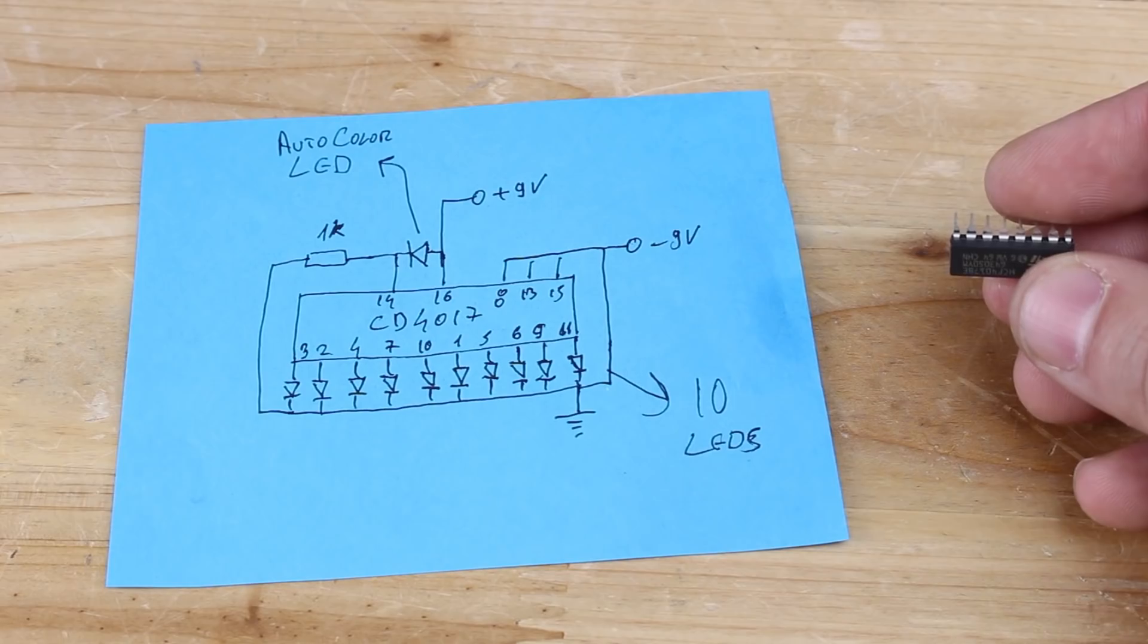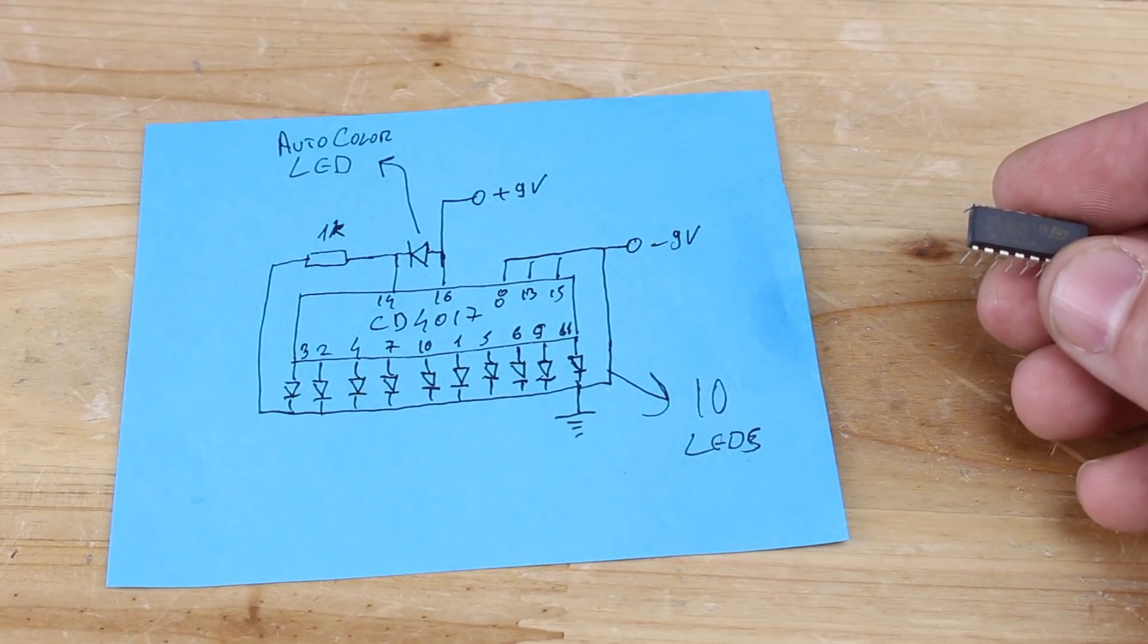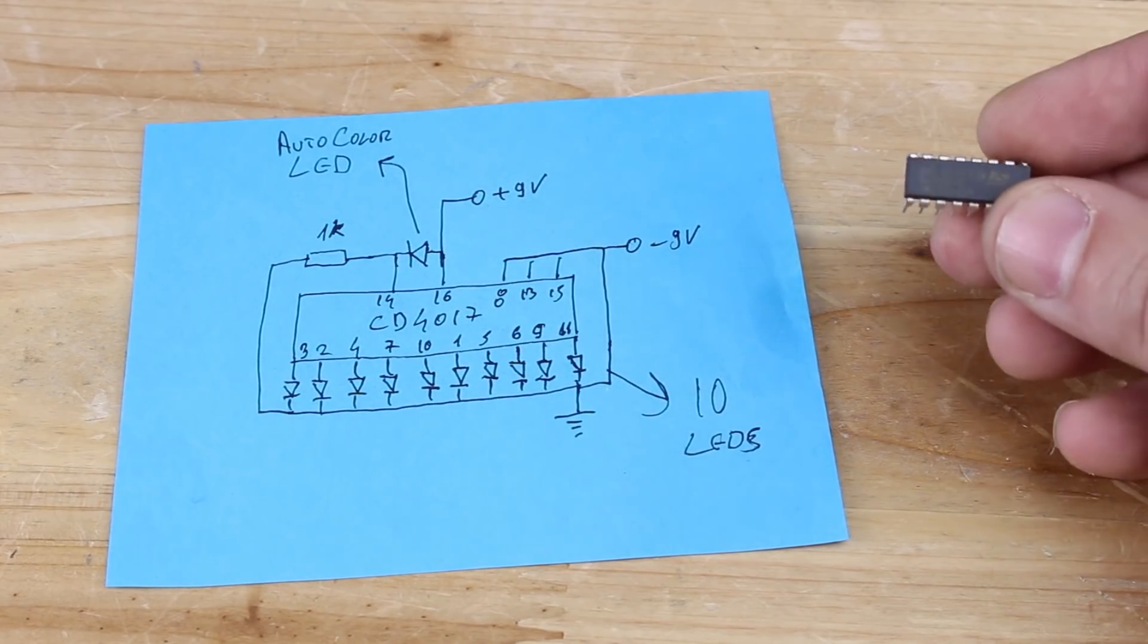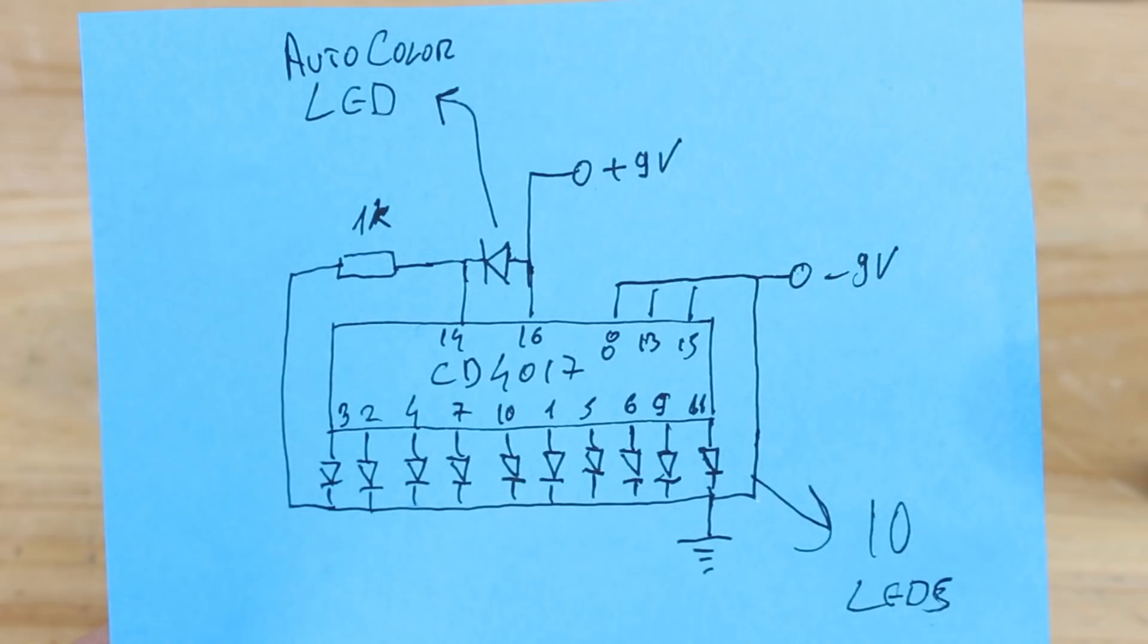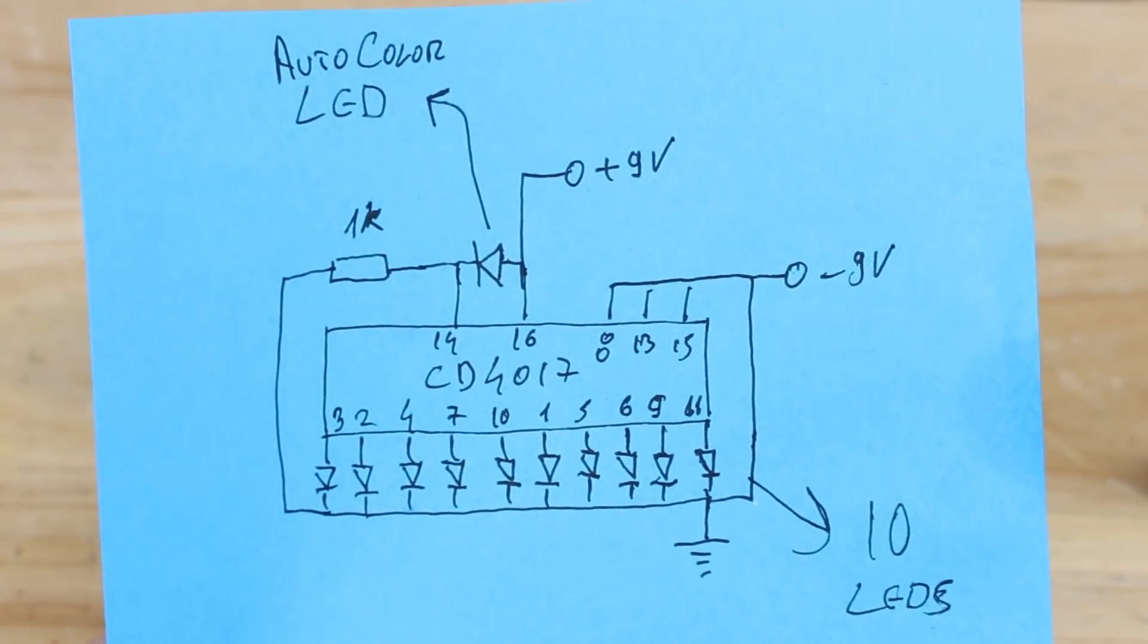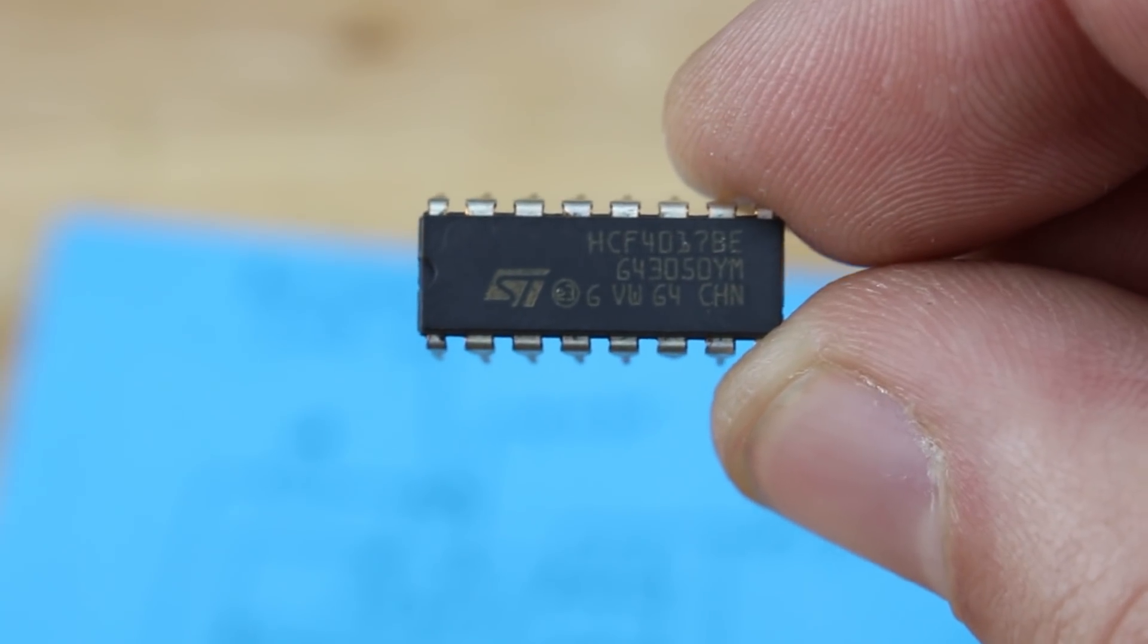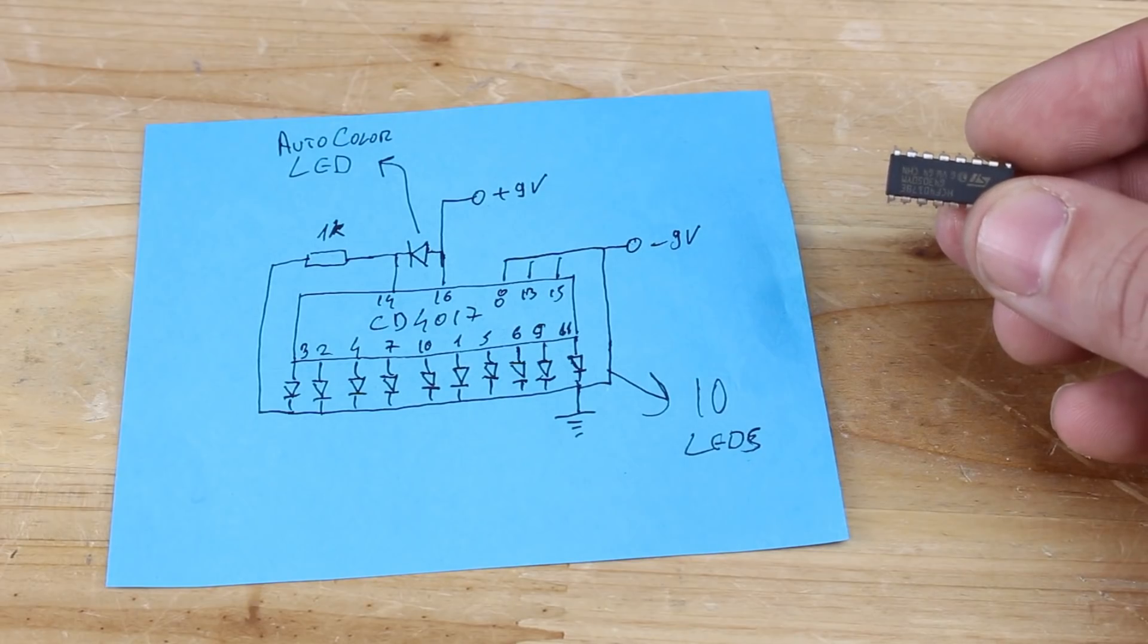This circuit is to make 10 chasing LEDs without 555 chip and I'm using multicolor LED for triggering the chip 4011 which have 10 decoded outputs. To make this circuit you need only the chip, 10 LEDs, one resistor and one multicolor changing LED.